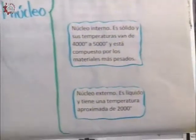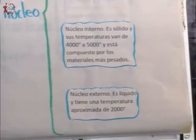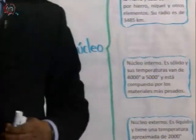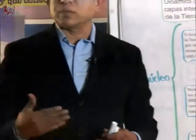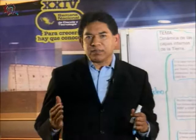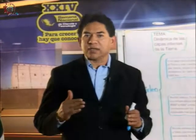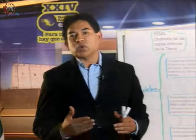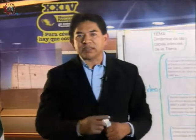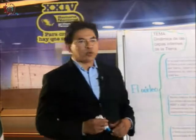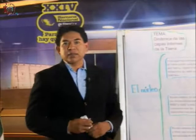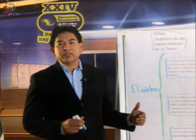How can we understand how the internal structure of the Earth formed? We can use an analogy: imagine you take a container filled with water and throw in different materials. The heaviest materials would sink to the bottom, slightly lighter materials would settle in the middle, and materials like wood or dry leaves would remain on the surface. In this way, we can compare the Earth's crust to those surface materials.